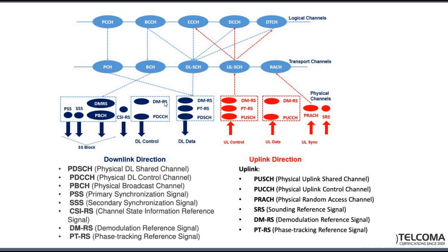The downlink control channel has DMRS and PDCCH for control signaling, similar to LTE. PDSCH carries normal packet data. DMRS and PTRS are demodulation reference signaling for downlink synchronization, where PTRS handles phase tracking. In the uplink, PUSCH and PUCCH are similar to LTE, also with DMRS and PTRS.